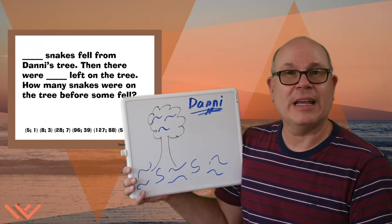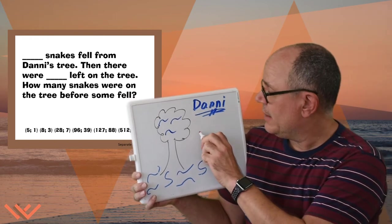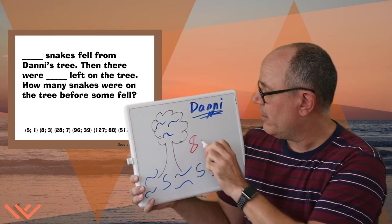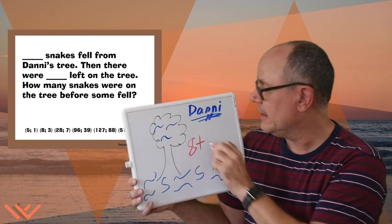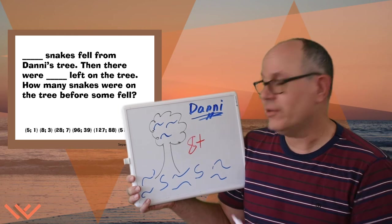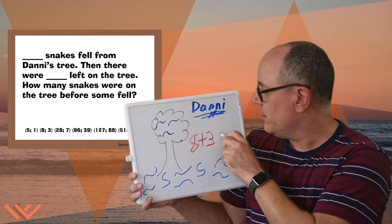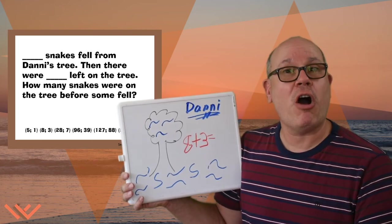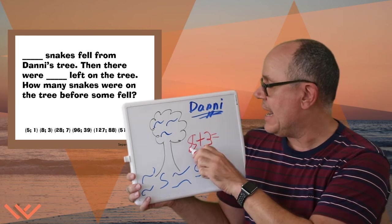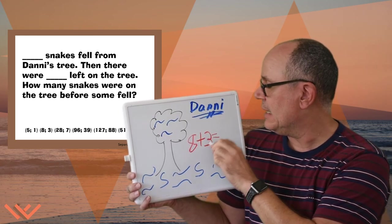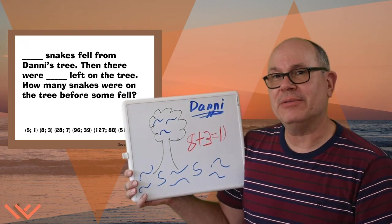Can you do it with the standard algorithm? Let's do that! So I have eight snakes that fell. I'm going to add, so use the plus sign, the three that are still up in the tree. We can use our skills of counting on. If we start with eight, we can say eight, nine, ten, eleven. So there were eleven snakes to begin with.